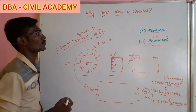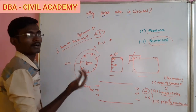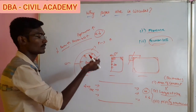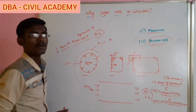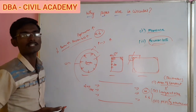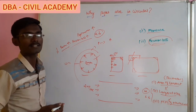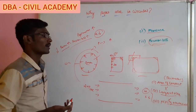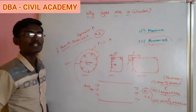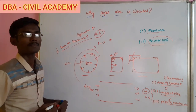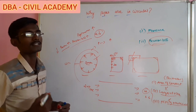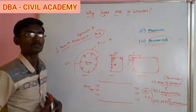You can consider and compare the other shapes with the circular shape. In this video, we have seen why pipes have a circular shape. If you have any doubts about this, please leave a comment. I will upload more videos. Thank you.